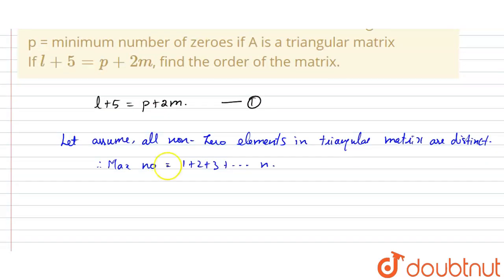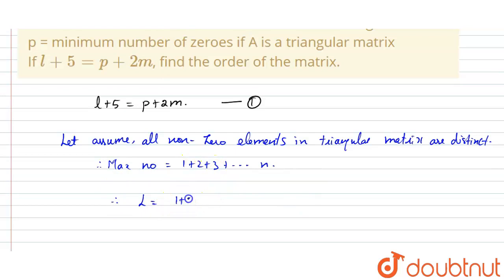The first column has one non-zero element, the second column has two elements, the third column has three elements, and so on up to the n-th column which has n values. Therefore, l = 1 + 2 + 3 + ... + n, which equals n(n+1)/2.